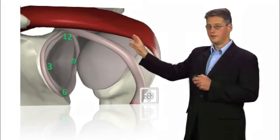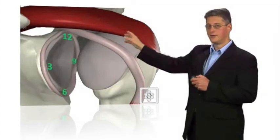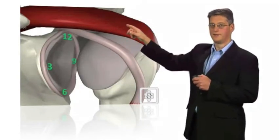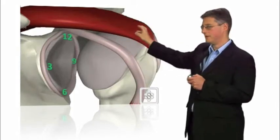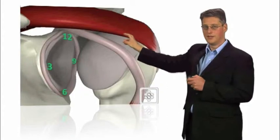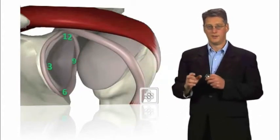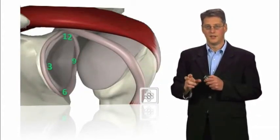If we look at the labrum itself you can see it's like a clock face. At the top twelve o'clock, at the front three, bottom six o'clock, and at the back nine o'clock positions. This is how we describe the different types of tears of the shoulder.